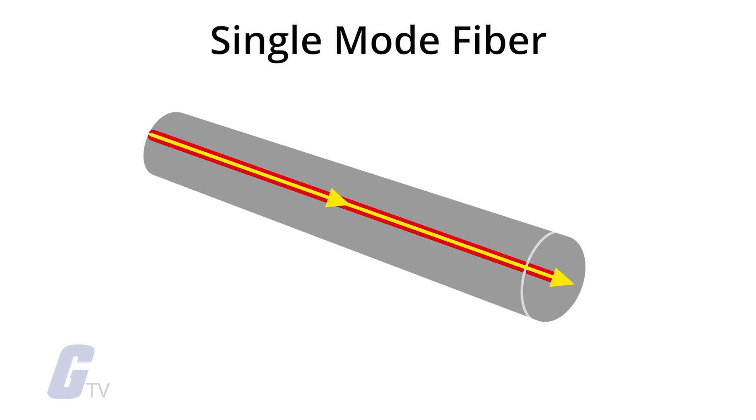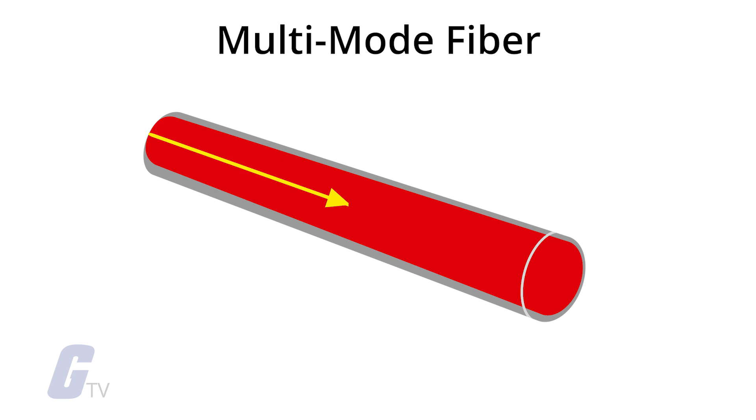Another type of fiber optic cable is called multi-mode. Multi-mode fiber is used for shorter distances because the larger core opening allows light signals to bounce and reflect more along the way.